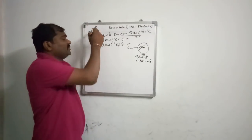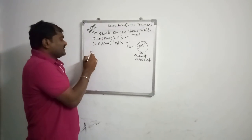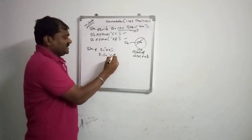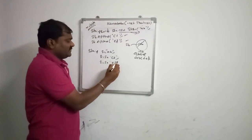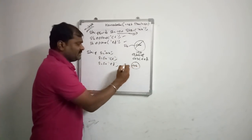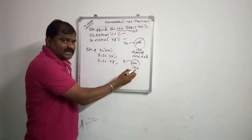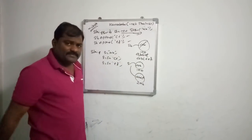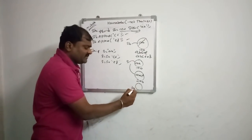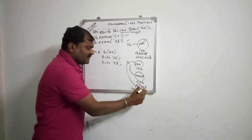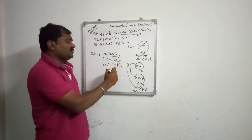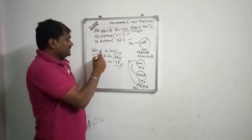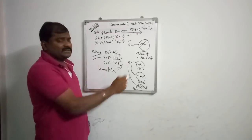StringBuilder is mutable — the value will change. With string, S = AB, then S = S + CD, then S = S + EF: in the first statement an object is created with value AB at address 100; in the second statement a new object is created with value ABCD at address 200; in the third statement another object is created with value ABCDEF at address 300. Three times printing the hash code gives three different addresses. So string is immutable — the value will not change.